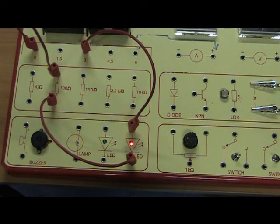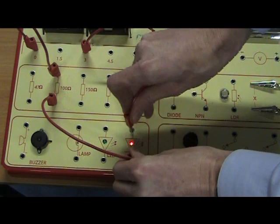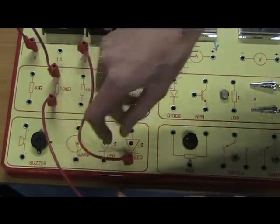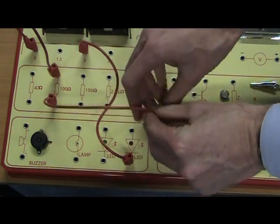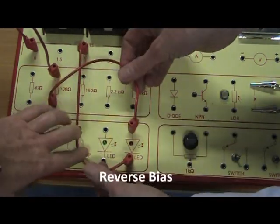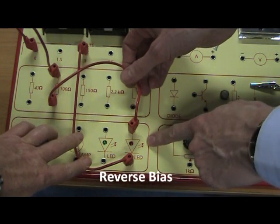Now if we swap the terminals on the diode, so I'm going to connect the plus side to the cathode on the minus end of the battery, of the LED, and connect the minus end of the battery to the plus side of the LED. You can see there is no light, it will not work.